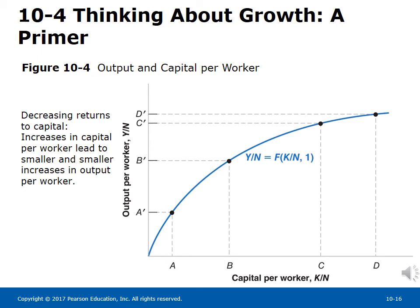Figure 10-4 shows the relation between output per worker and capital per worker. Output per worker is on the vertical axis and capital per worker is on the horizontal axis, with the relation given by an upward-sloping curve. As capital per worker increases, so does output per worker. The shape of the curve depicts decreasing returns to capital: increases in capital per worker lead to smaller and smaller increases in output per worker. At point A, where capital per worker is low, an increase in capital per worker (distance AB) leads to an increase in output per worker shown by distance AB'.